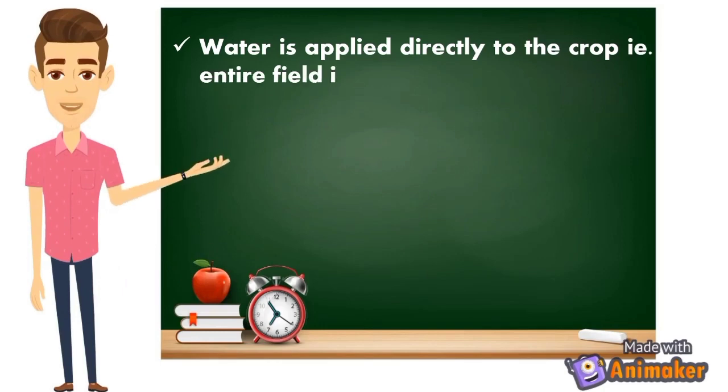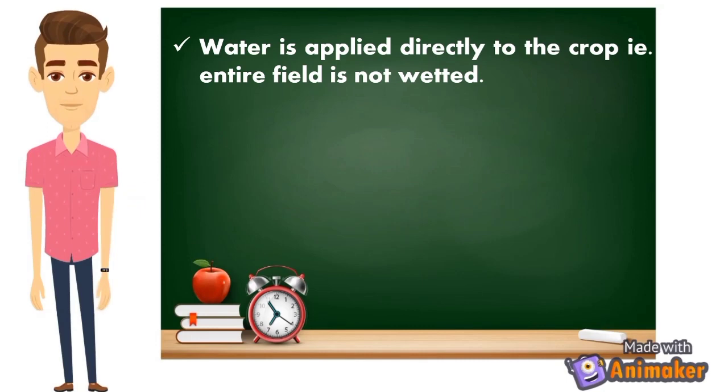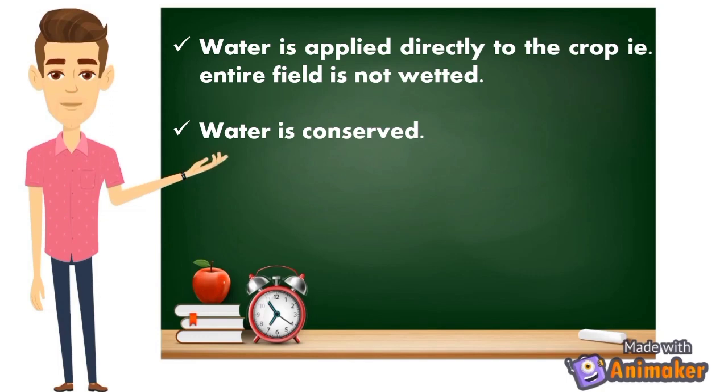In the drip or trickle irrigation system, water is applied directly to the crop, so the entire field is not wet. This means water is applied directly to your plants, not the whole field.